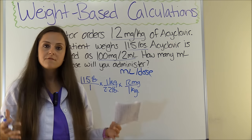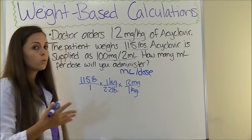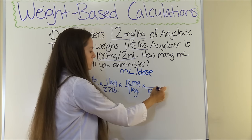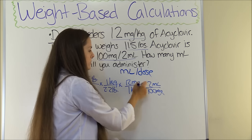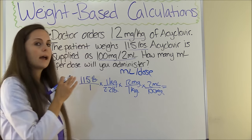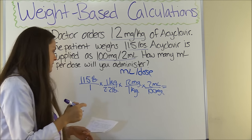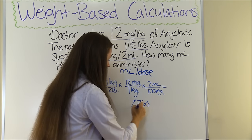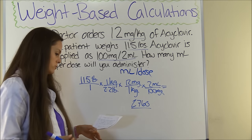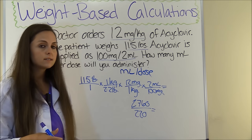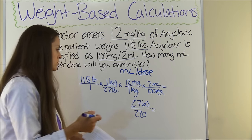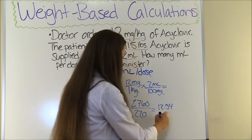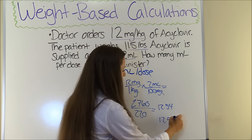Now we have to take it a step further and figure out how many milliliters we're going to give per dose. We're supplied with 2 milliliters per 100 milligrams, so 100 milligrams equals 2 milliliters — that cancels out milligrams and we're in milliliters. We multiply everything at the top: 115 × 1 × 12 × 2 = 2,760. Everything at the bottom: 1 × 2.2 × 1 × 100 = 220. Then 2,760 ÷ 220 = 12.54, rounded to the nearest tenth: 12.5 milliliters per dose.